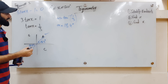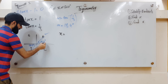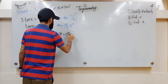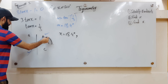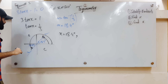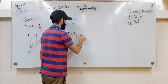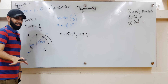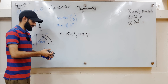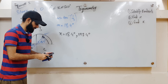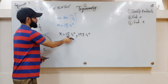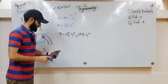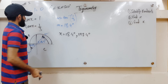Step three: find x. Starting from the positive x-axis and going anti-clockwise, the first value of x is the same as alpha, so x = 18.4 degrees. The second value is 180 degrees to the start of the third quadrant plus another 18.4, giving x = 198.4 degrees. Since it's an angle, we give it correct to one decimal place. To check: tan(18.4) is very close to 1/3, and tan(198.4) also turns out to be very close to 0.3333. That's how you solve a question like this.